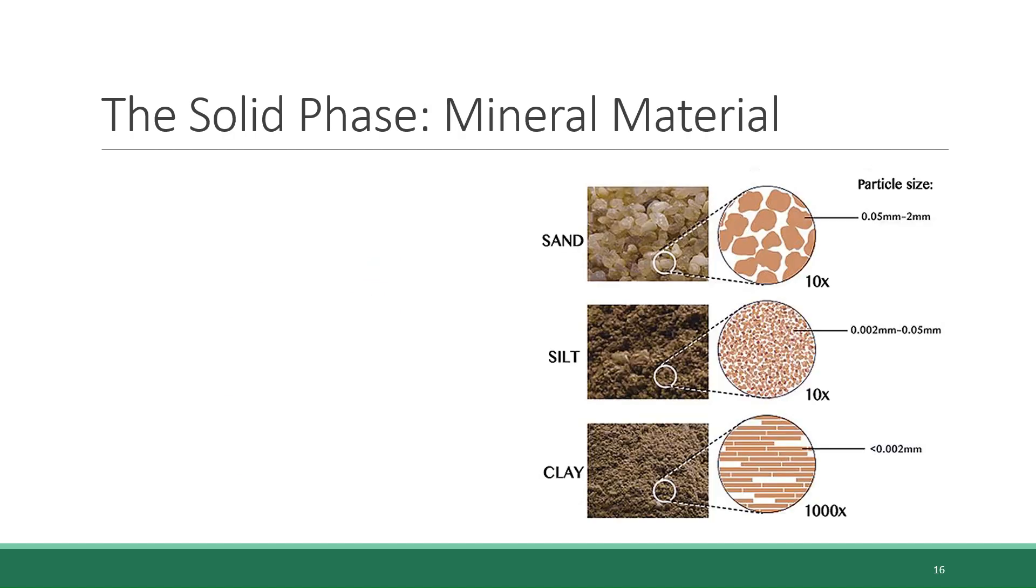Starting with the mineral material, which is one of the two pieces of the solid phase. So as we've said, the mineral material is what we might think of as the dirt. There are three major categories of mineral material, and those are sand, silt, and clay. These three categories differ based on their size, and then their size variation in turn imparts certain qualities on the soil. Sand is the largest of the three particles, ranging from 50 to 2,000 micrometers in size. The upper end of that range is about the thickness of a nickel.